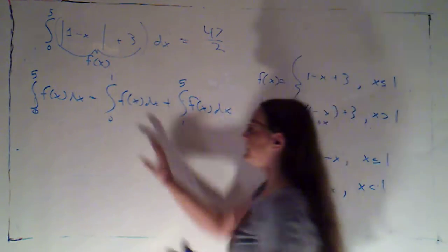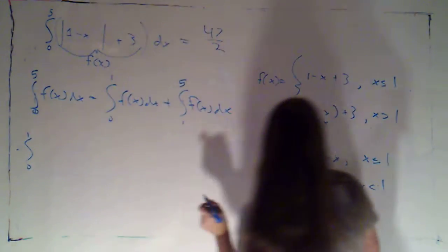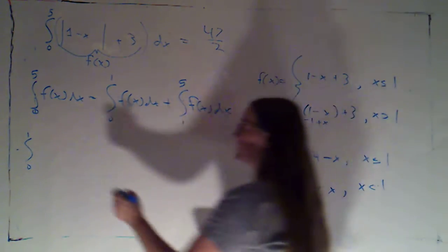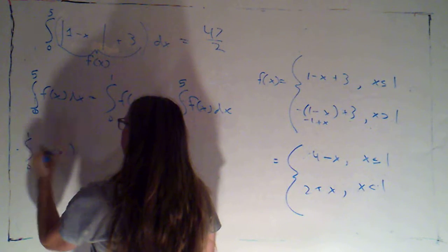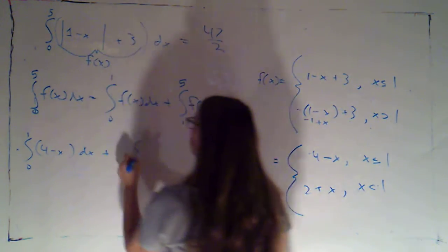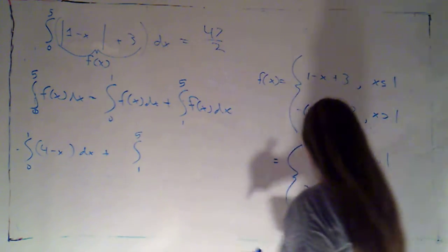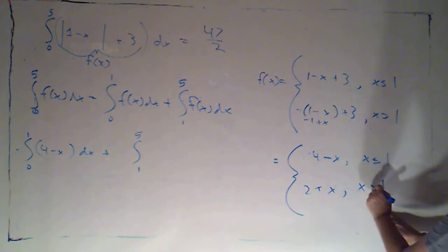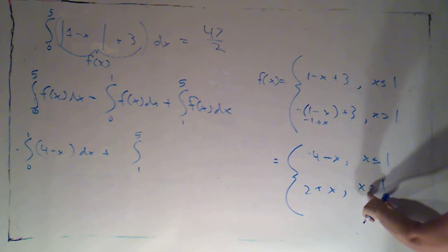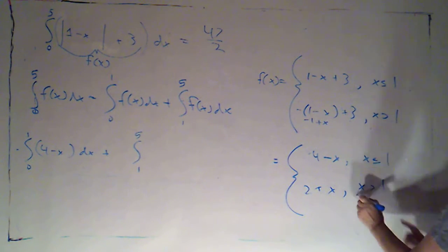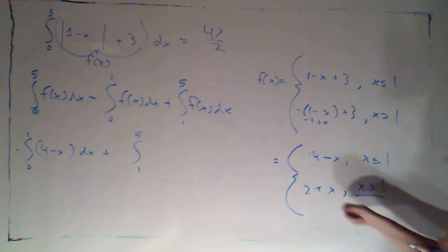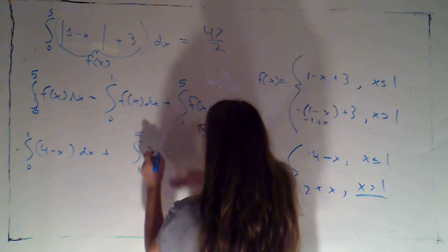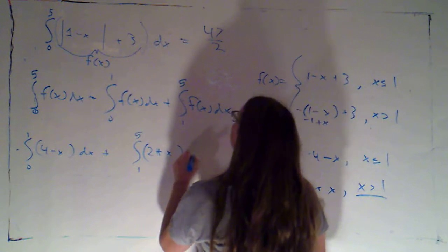And then from 0 to 1, let's see that was when x was less than or equal to 1 so I'm using this rule, we're looking at 4 minus x dx. Plus from 1 to 5 now, I'm sorry, I'm using this rule when x is bigger than 1. I've written less than, I do apologize, that should be a greater than. Now I'm using this rule: 2 plus x dx.